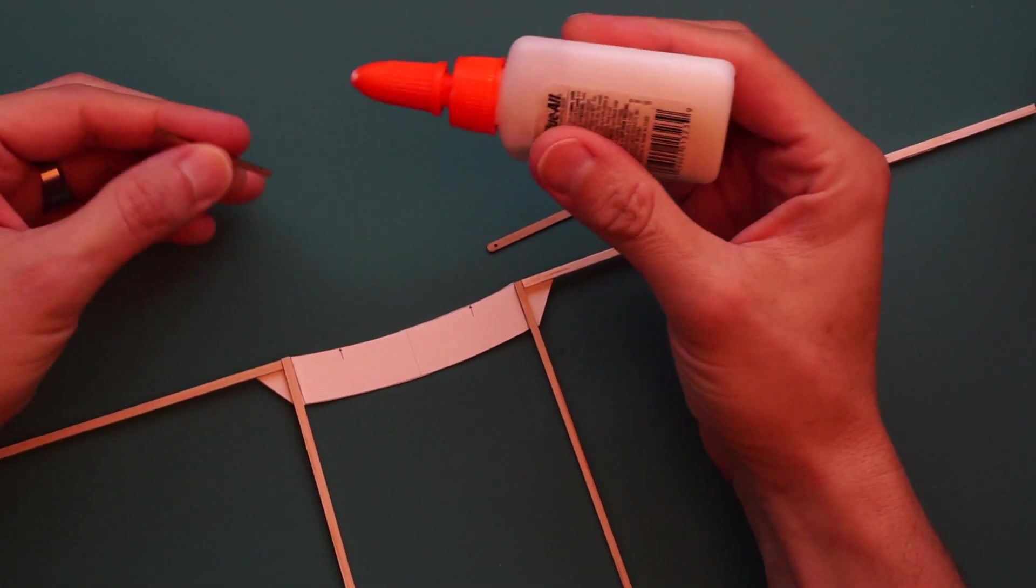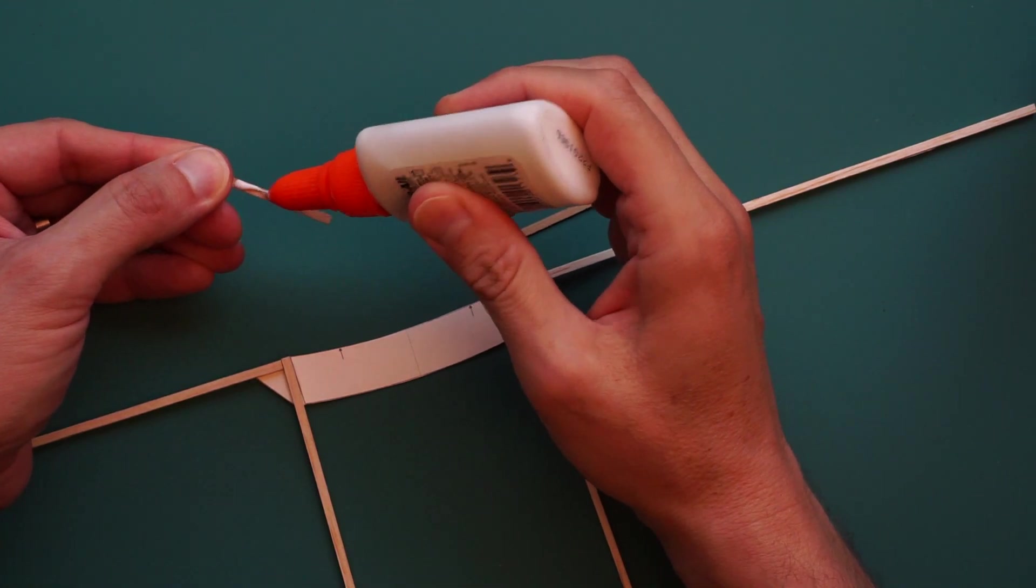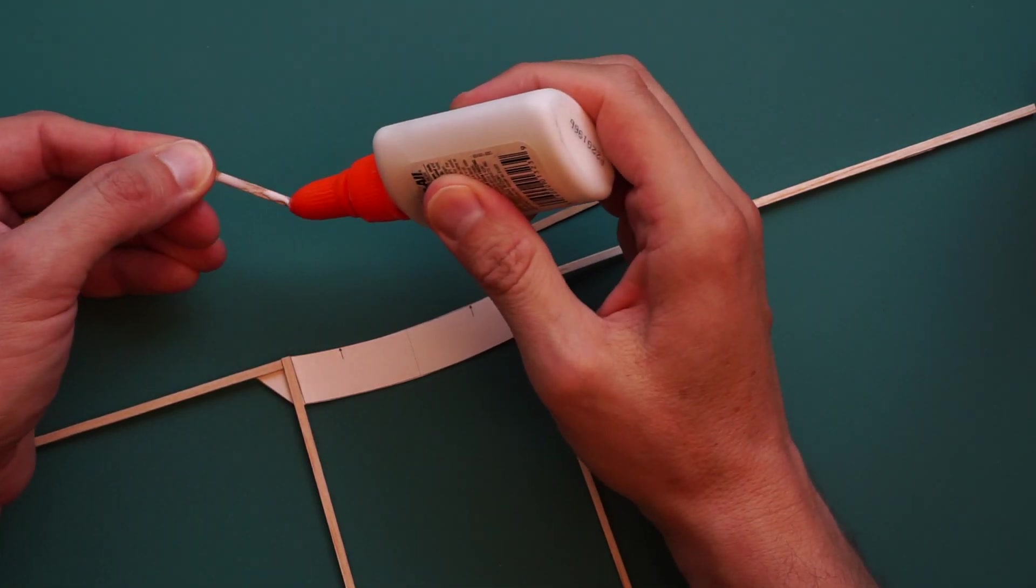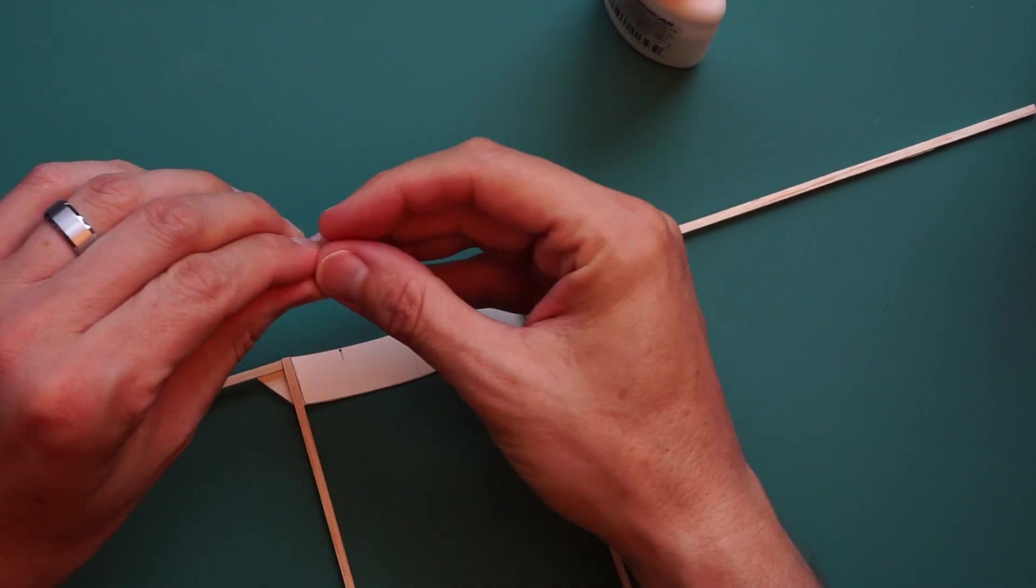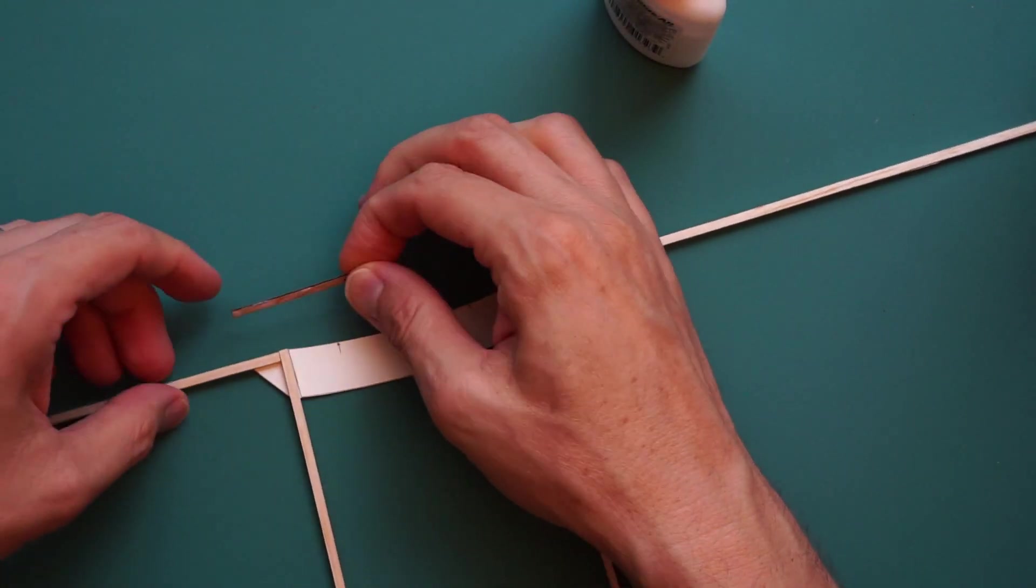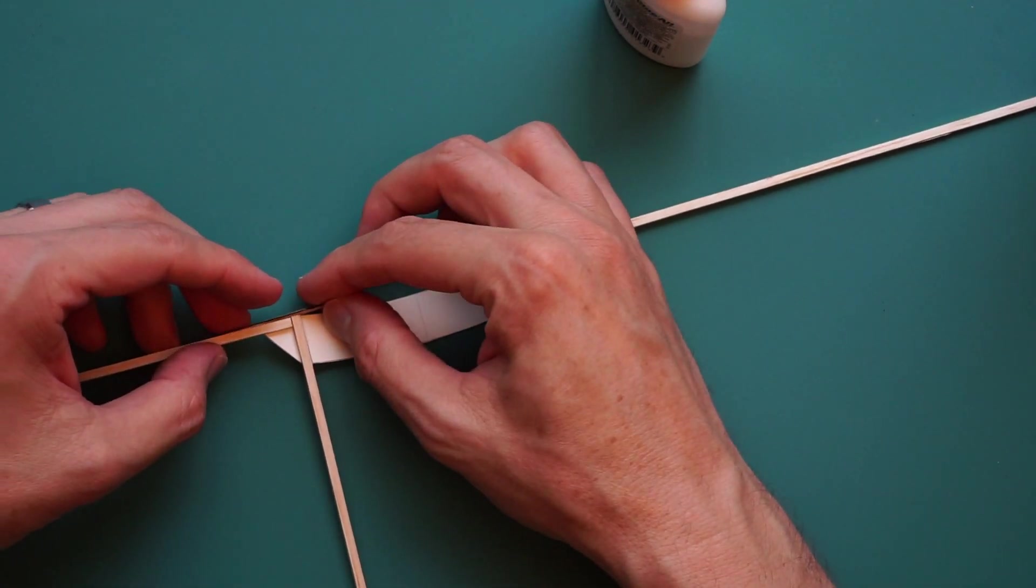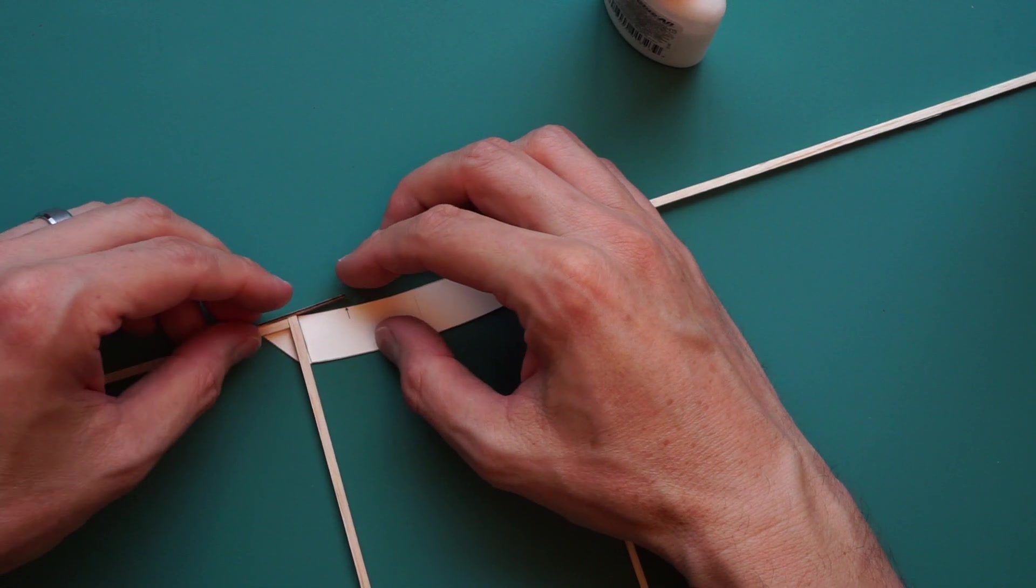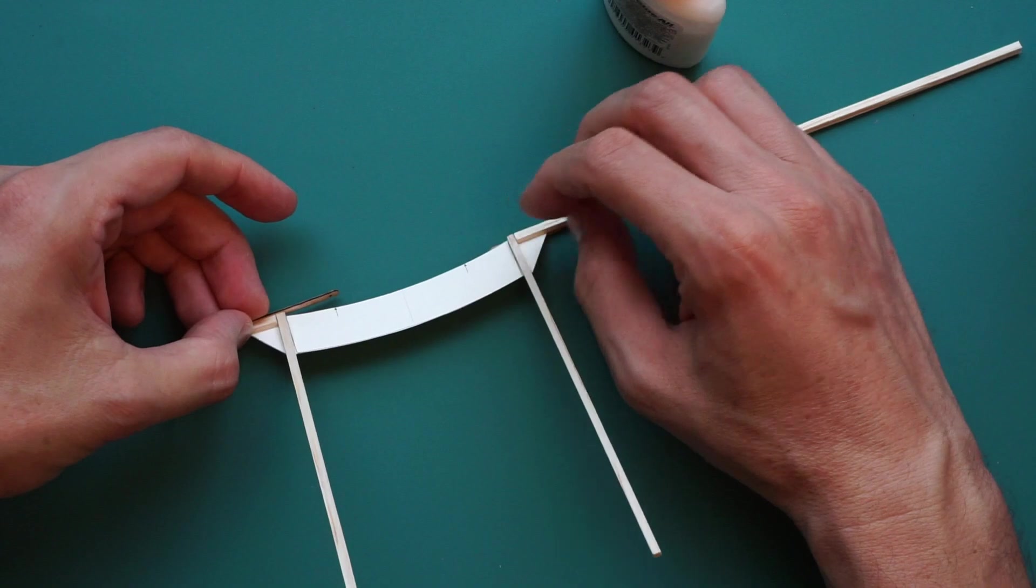Now we're going to glue the wing levers onto the wing assembly. Line up the hole with the little arrow on the cardstock.